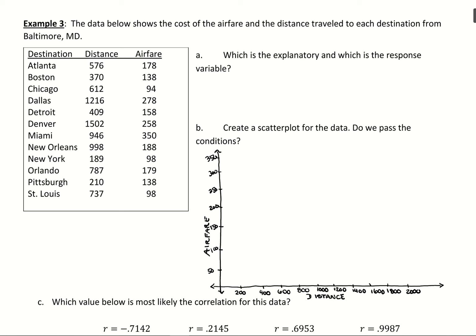Thinking about explanatory and response variables - the explanatory variable is our x variable whereas response is y. We can think of would distance respond to airfare? Would distance change based on the airfare that's paid, or would airfare change based on distance? That sentence of airfare changes based on distance makes more sense.